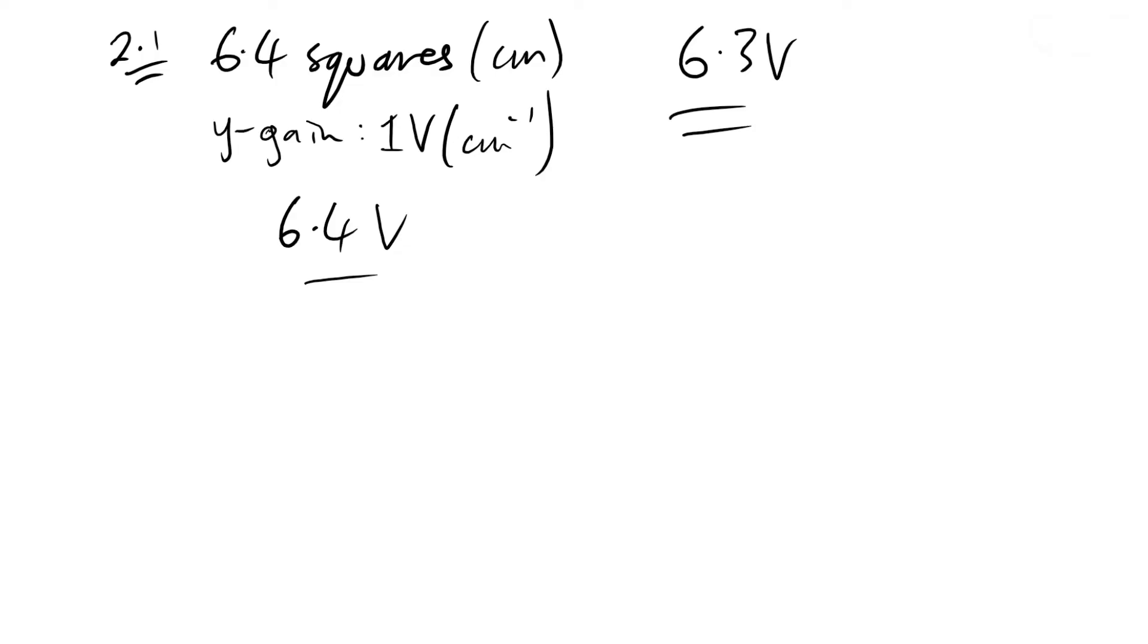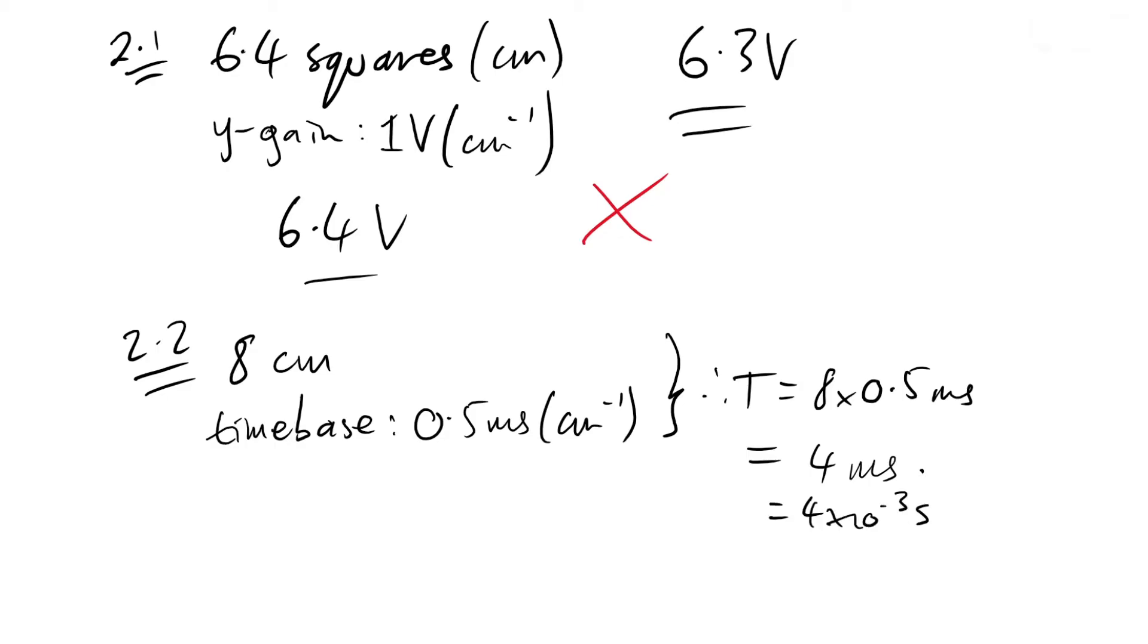Determine the frequency. So how many centimeters or squares wide is one complete wave? Let's see: one, two, three, four for half a wave, so therefore it's going to be eight centimeters for a whole wave. We're told in the diagram that the time base is 0.5 milliseconds per centimeter, so therefore time period is just going to be eight times that, 0.5 milliseconds. So that is four milliseconds. We know that's 4×10⁻³ seconds. We're looking for frequency. Frequency and time period are reciprocals of each other, therefore we're just going to do that and that gives us 250 hertz.